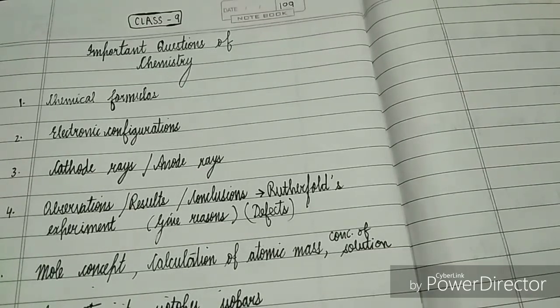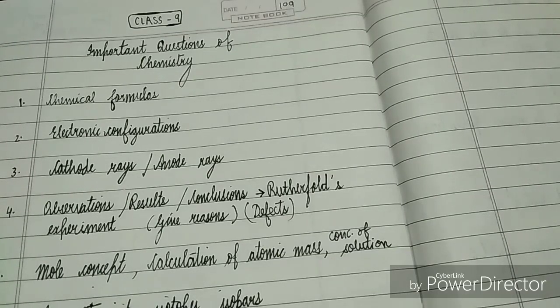The next important concept from class 9 chemistry is electronic configurations. This is a very important topic from the chapter Structure of Atoms. You need to know how to write those, as questions definitely come in the exam.